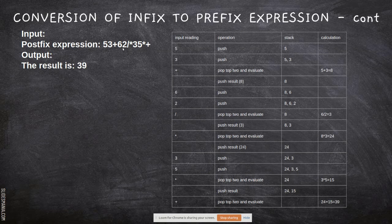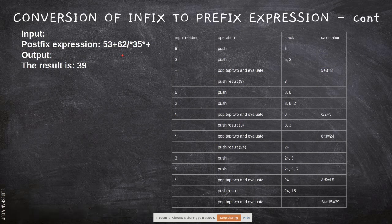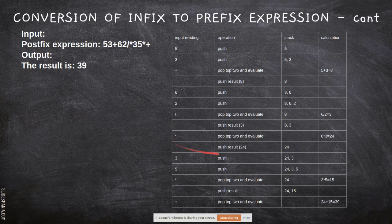The next character is 6 — it is an operand, so push it. Then 2 is also an operand, so push it. The next character is /, a division operator. Pop the top two elements and perform the operation: 6 ÷ 2 = 3. The result 3 is pushed back into the stack.